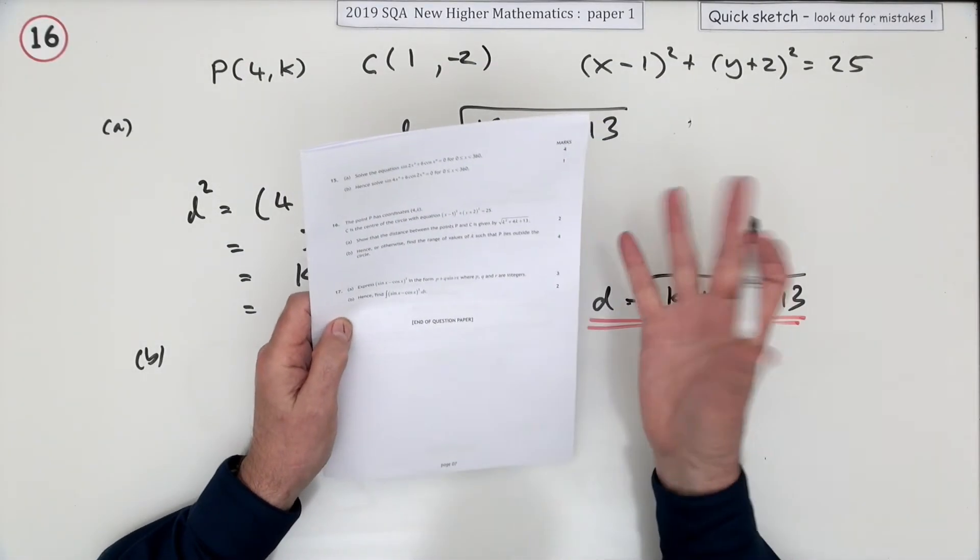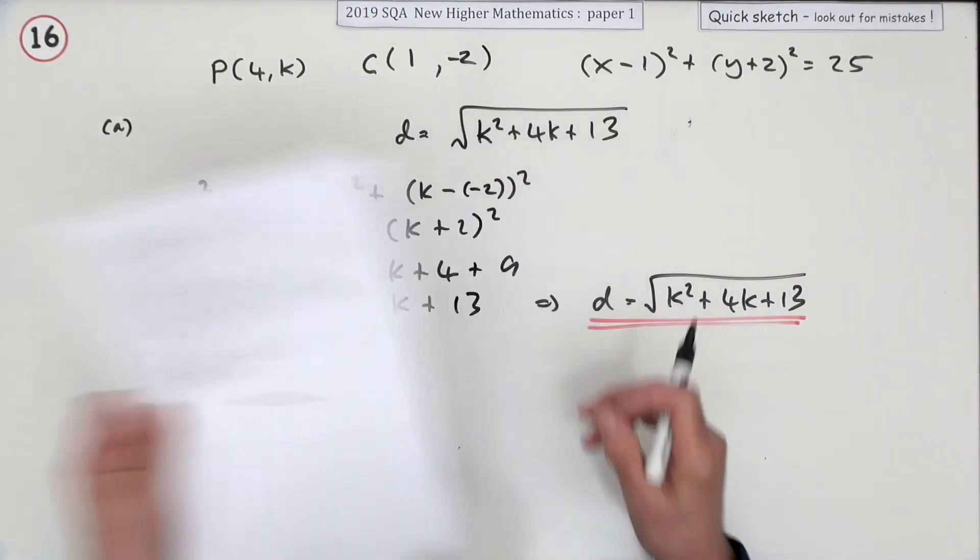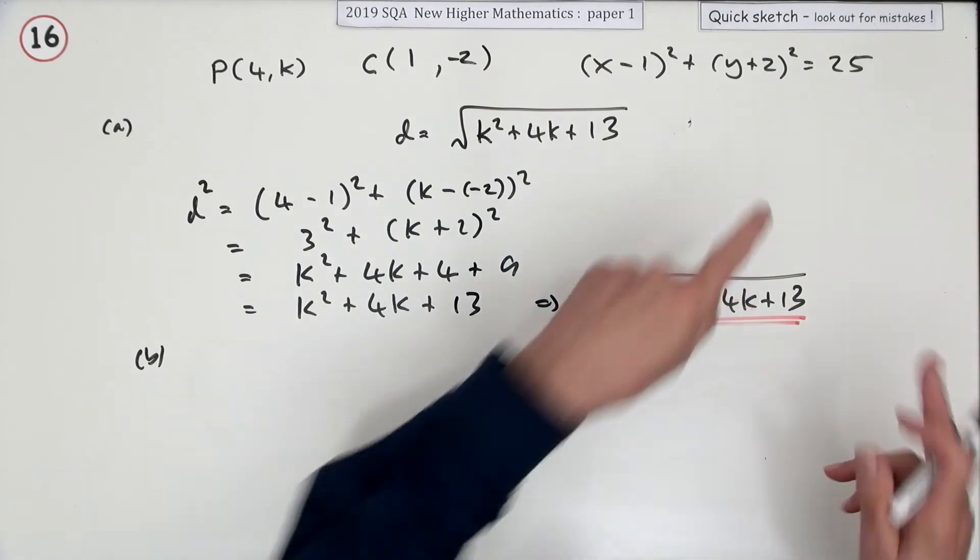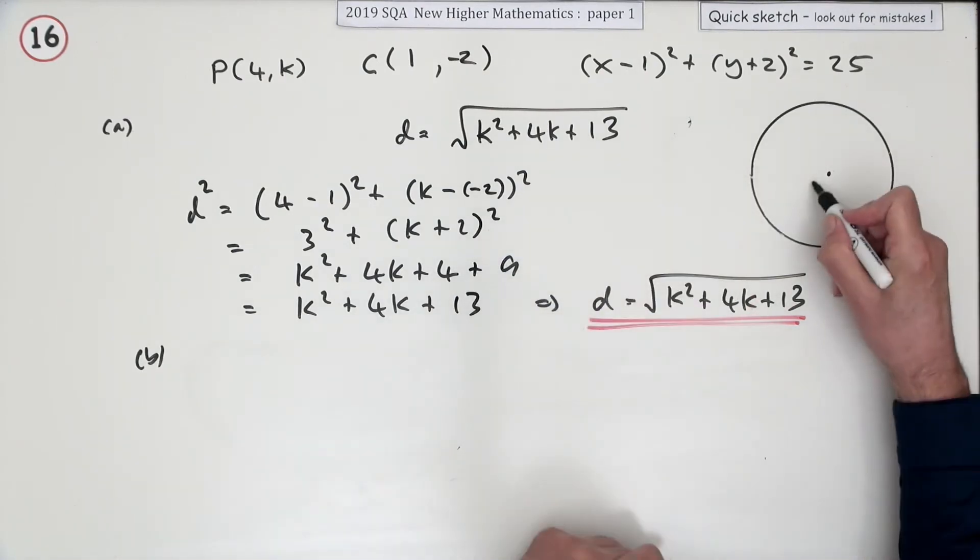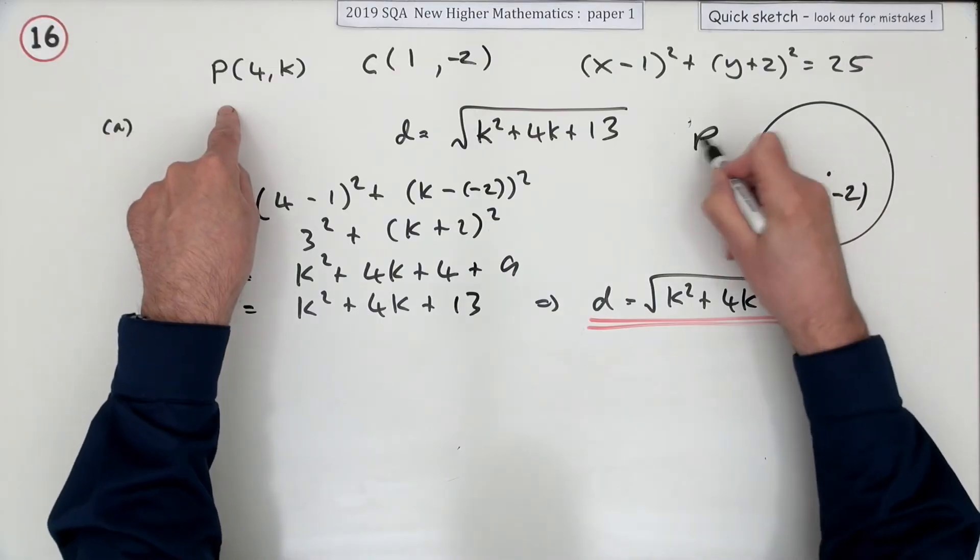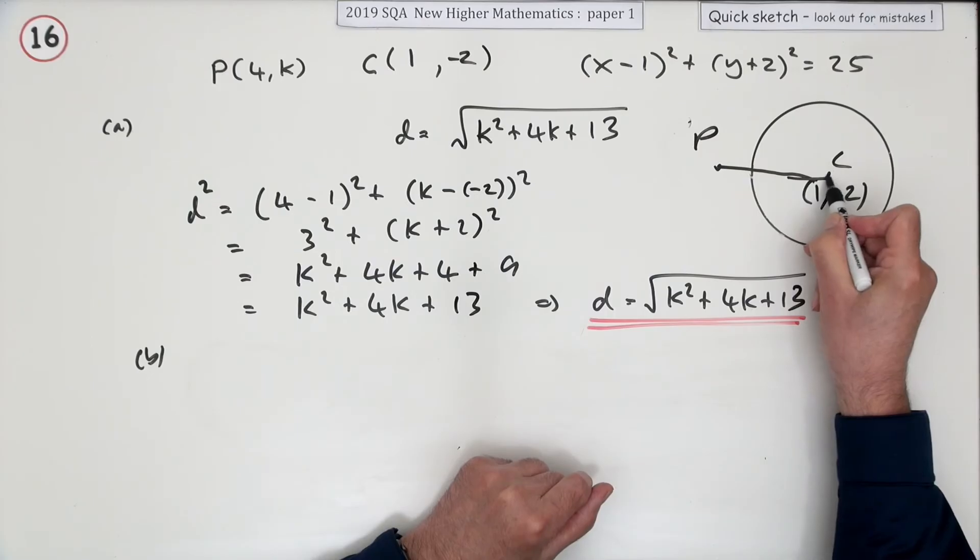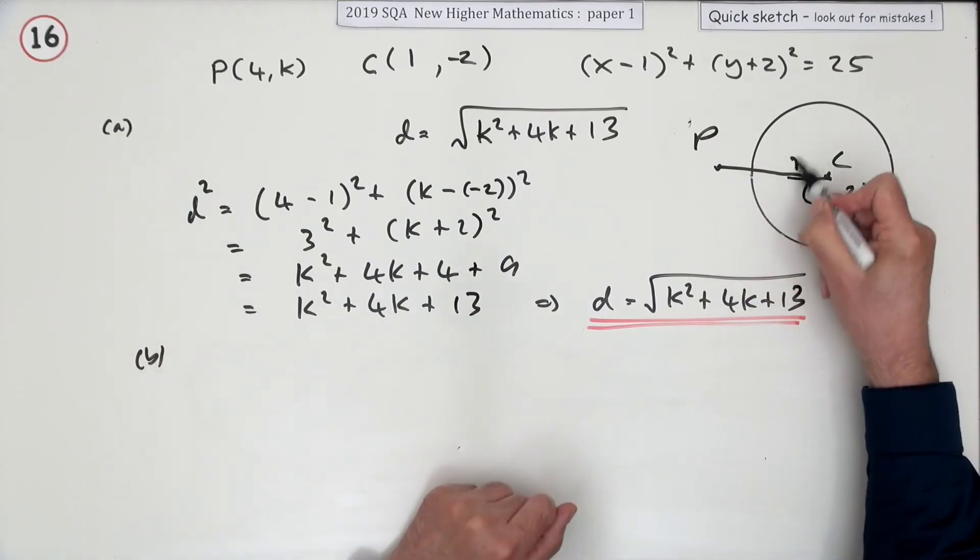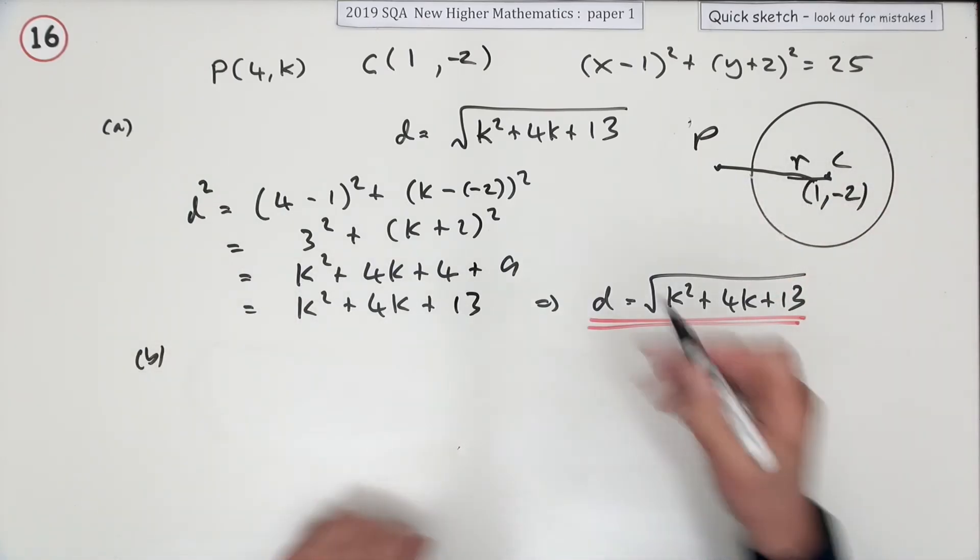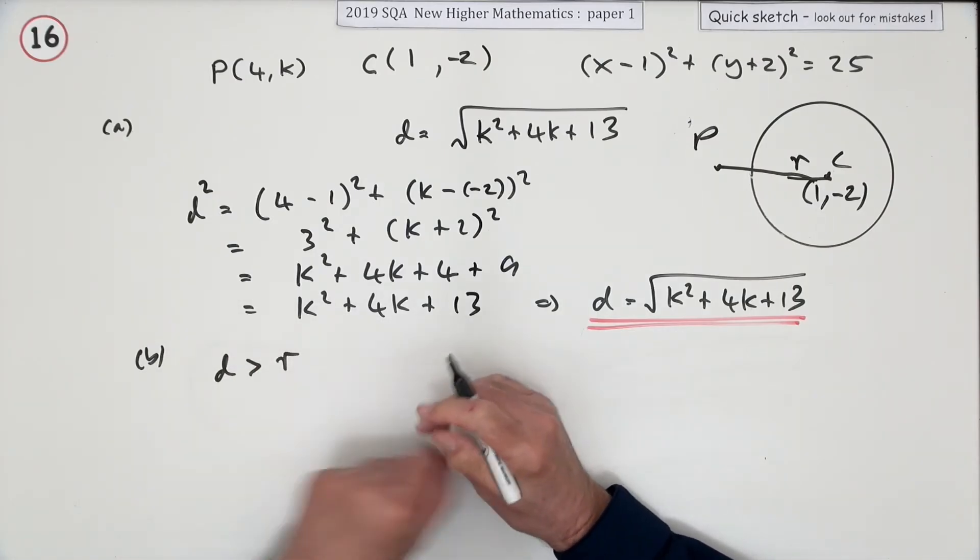Part B: Hence or otherwise, find the range of values of K for which P lies outside the circle. Well, if you've got a circle with its center (1, -2) and P has to be outside of it, that means the distance which we've called d will have to be greater than the radius. So that's the statement we'll put down: d has to be greater than the radius. So what is the radius?